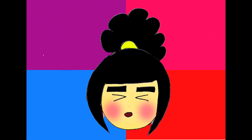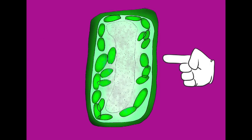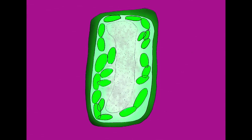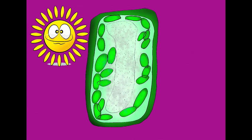First up is the palisade cells. Palisade cells are vertically rectangular in shape and has lots of chloroplasts for photosynthesis.